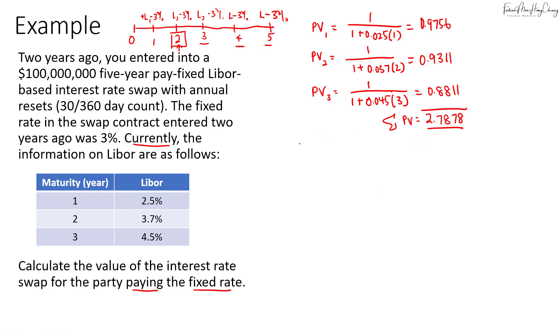So we now need to get the new swap rate. So the swap rate as of year 2 for the remaining three years, that will be 1, assuming this is our notional, and then we minus the last PV, which is 0.8811, and then we divide by the total PV. So that's 2.7878.